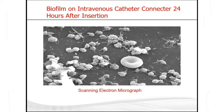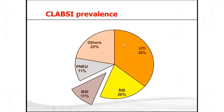This slide shows extraluminal and intraluminal contamination of the catheter. CLABSI is not the most common HAI, but it is a very serious infection. When it happens, it causes bacteremia, and the symptoms of bacteremia can be fatal.